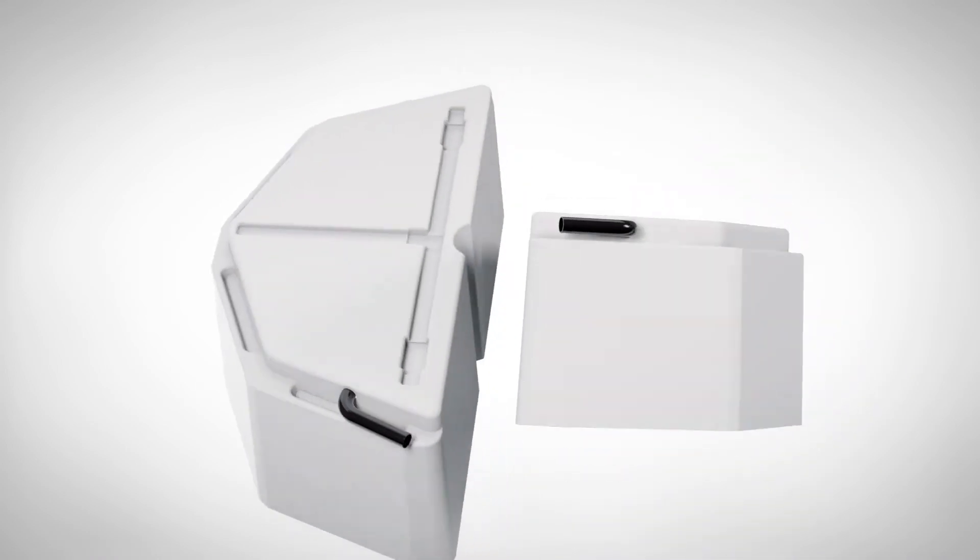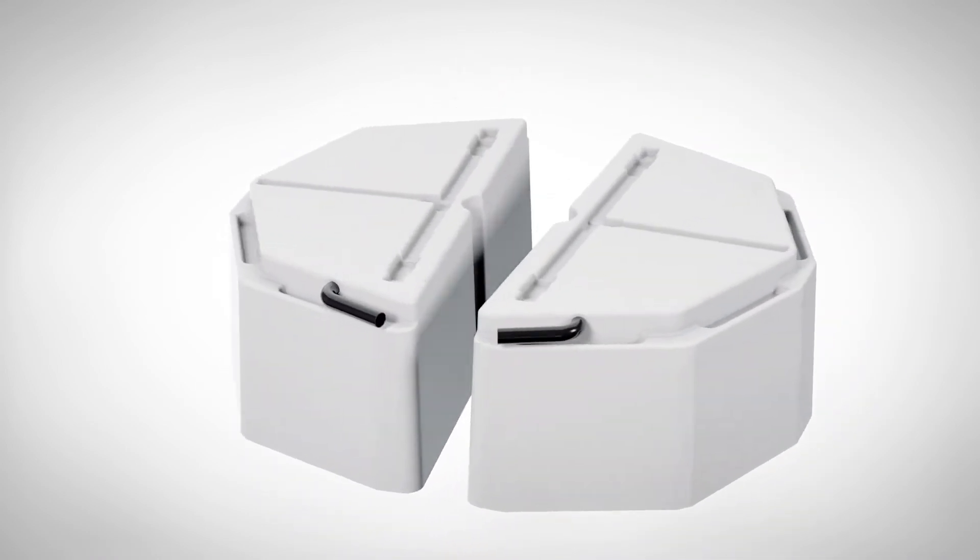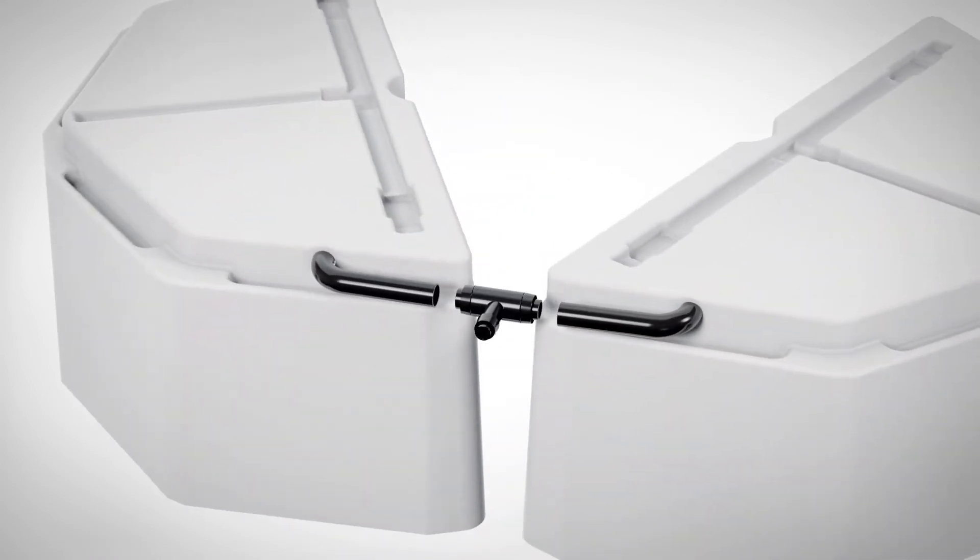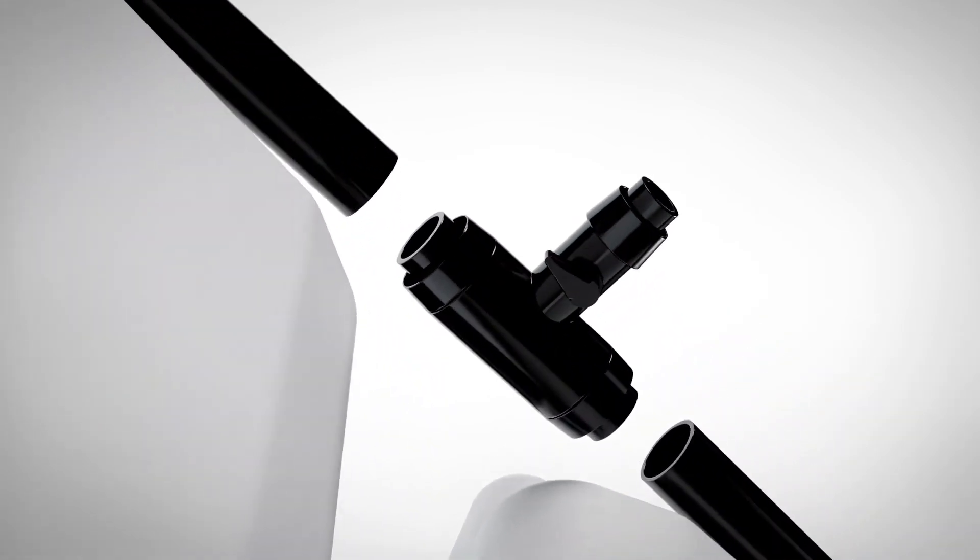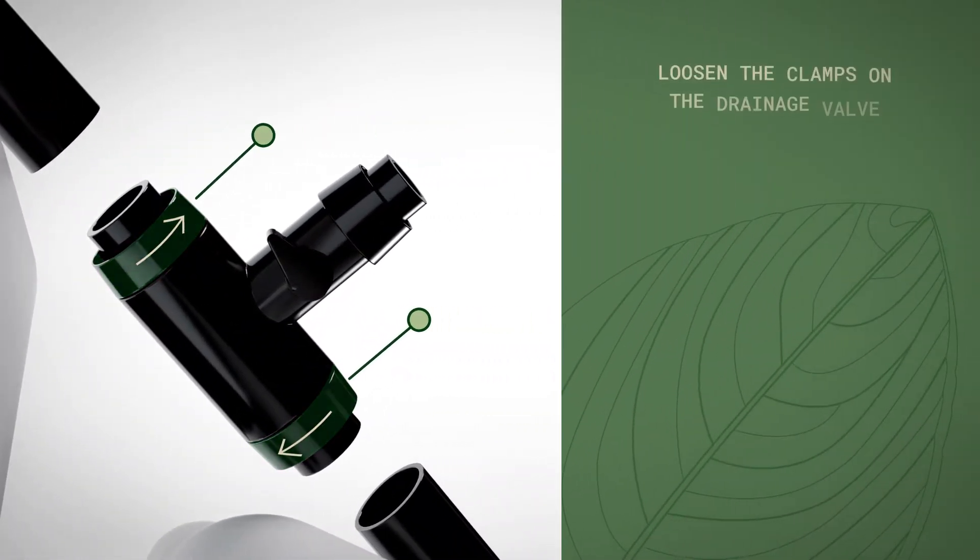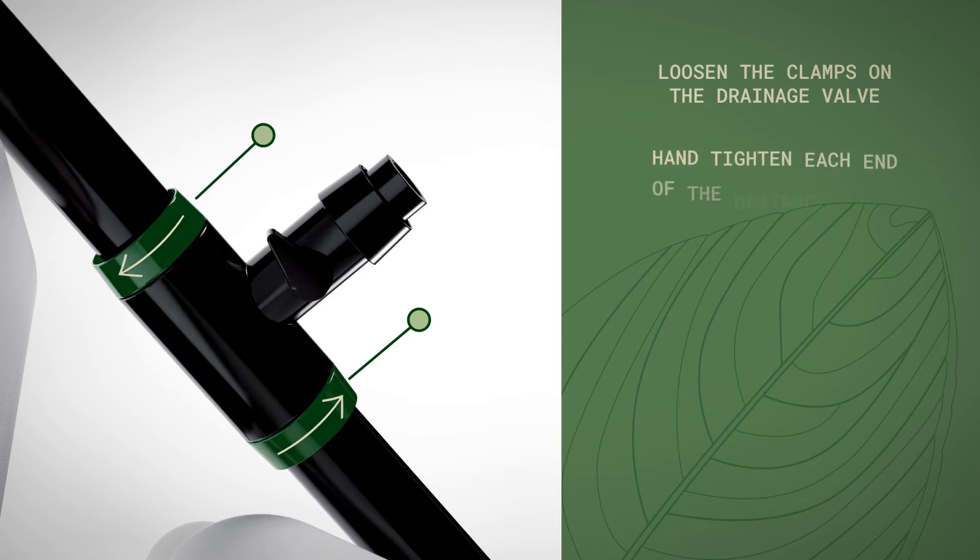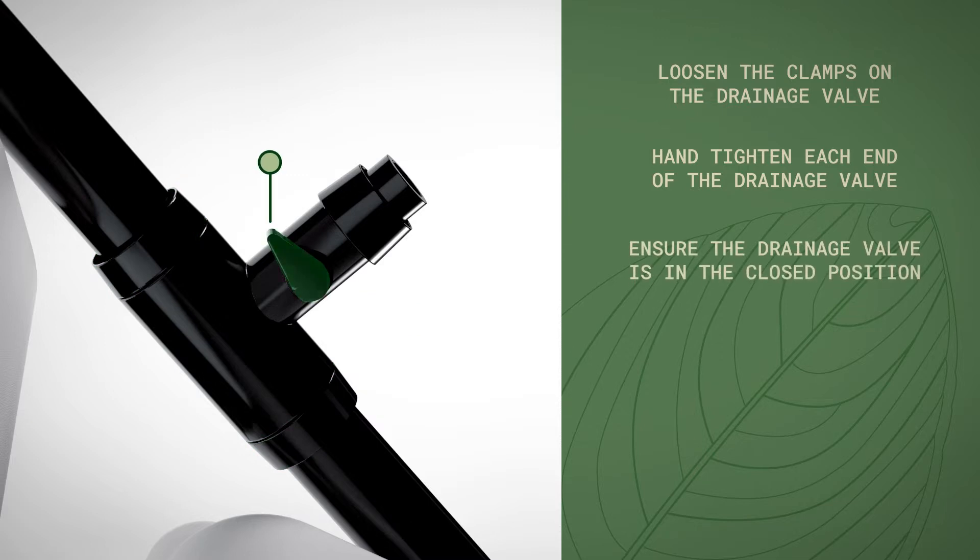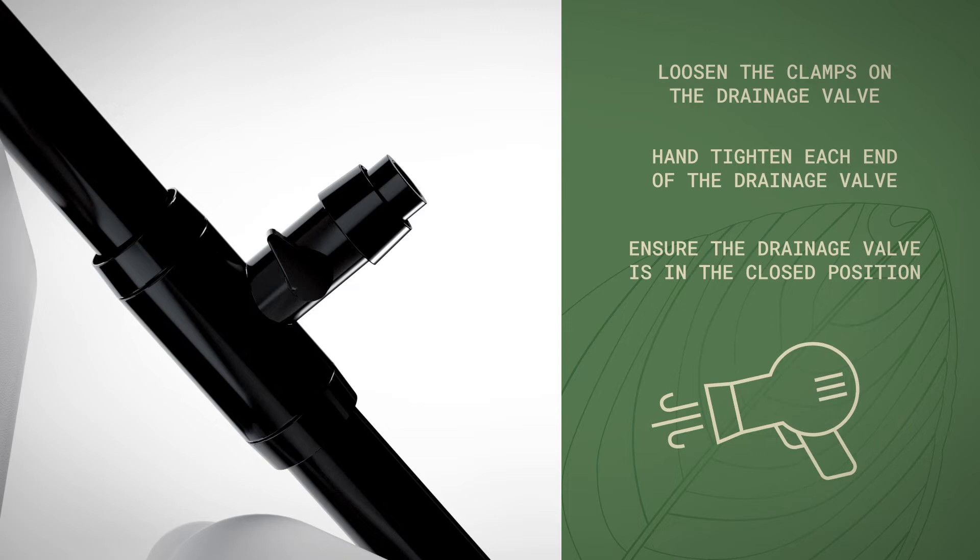Turn the tanks over and align them to connect with the drainage valve. Connect the three-fourths inch vinyl tubing attached to the back of both tanks to the drainage valve. Loosen the clamps on the drainage valve then hand tighten each end around the tubing and ensure the drainage valve is in the closed position. A hair dryer can be used to soften the tubing if you're having a difficult time attaching the tanks properly.